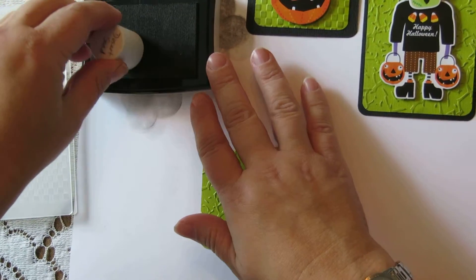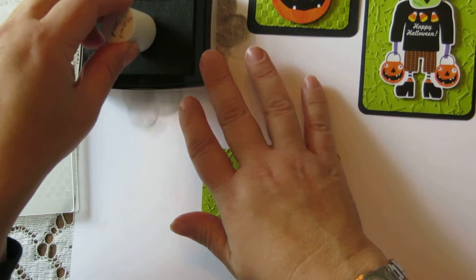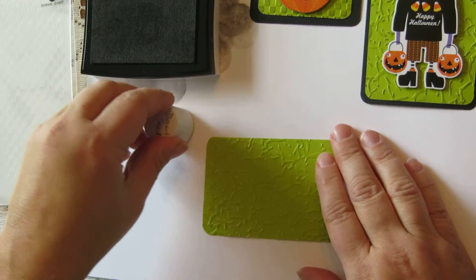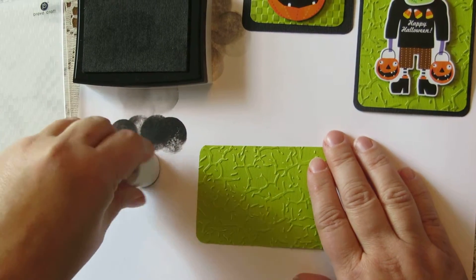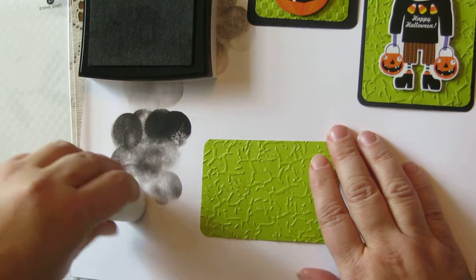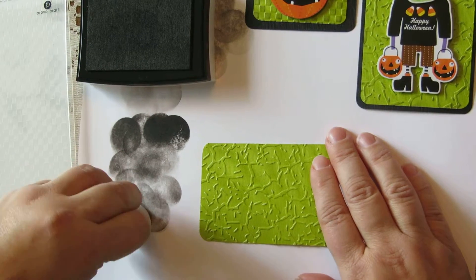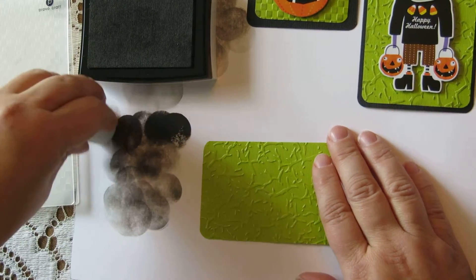It's Halloween so I'm using black ink. You're going to tap your Darice craft marshmallow on the black ink pad and then you're going to take most of that ink back off on a scratch piece of paper. It's very important you want your enhancement to be subtle and not to be overwhelming.